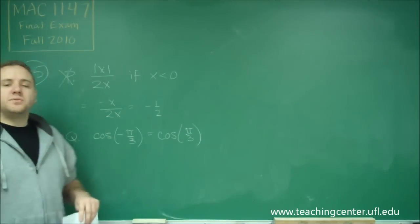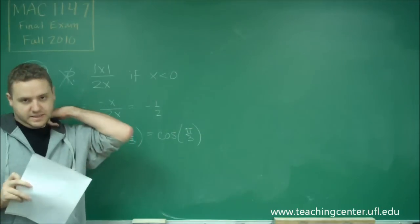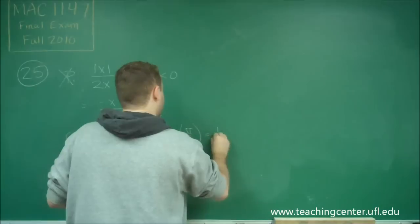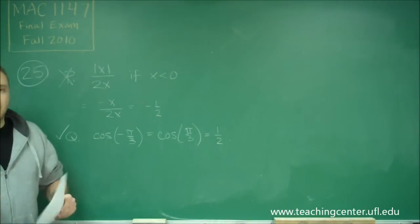And cosine of pi over 3 is one of your standard unit circle measurements. Pi over 3 is 60 degrees, and cosine of that is equal to one-half. So, Q is equal to one-half.